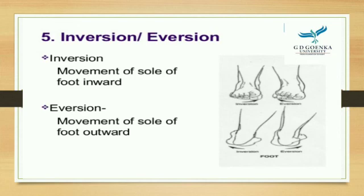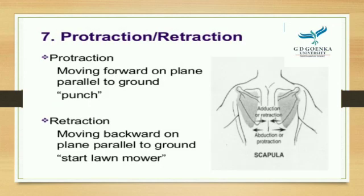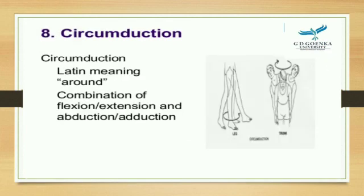Inversion is the movement of the sole of the foot inward; eversion is the movement of the sole of the foot outward. Medial rotation (internal rotation) means the anterior surface moves towards the midline; lateral rotation (external rotation) means the anterior surface moves away from the midline. Protraction is moving a part forward on a plane parallel to the ground; retraction is moving it backwards. Circumduction is a circular movement that is the combination of flexion, extension, abduction, and adduction.